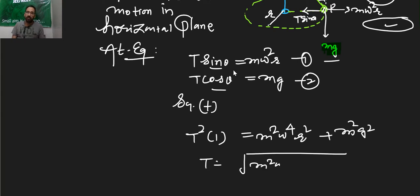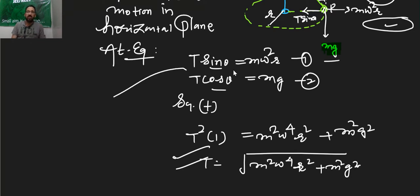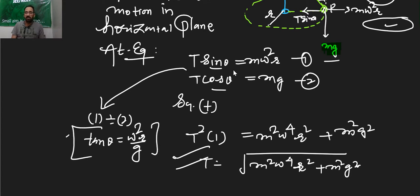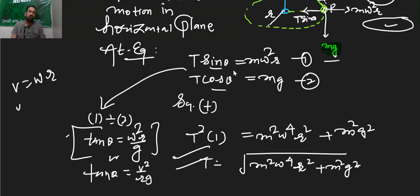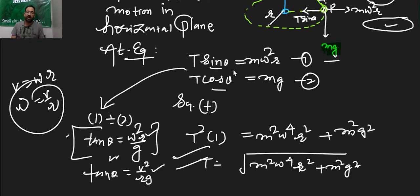To calculate tension, square and add both equations. Since sine squared plus cos squared theta equals one, we get T squared equals m squared omega⁴ r² plus m² g², so T equals the square root of m squared omega⁴ r² plus m² g². To calculate the angle, divide equation 1 by equation 2: sin theta over cos theta gives tan theta equals omega squared r upon g. You can also write this as tan theta equals v² upon rg if using linear speed, since v equals omega r. These two formulas — tension and angle — are the key results for conical pendulum.